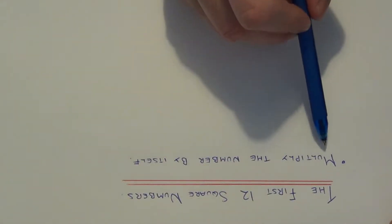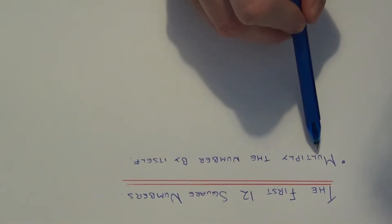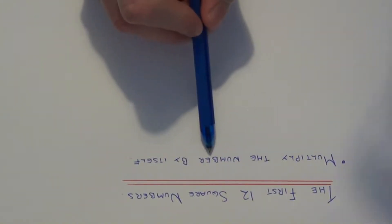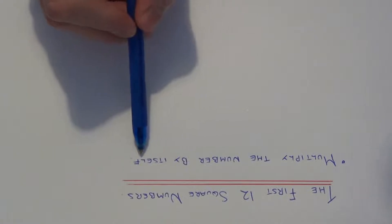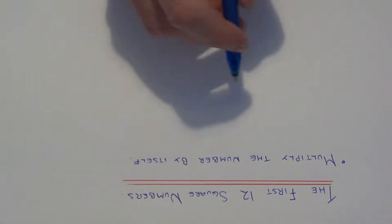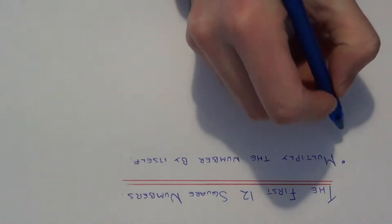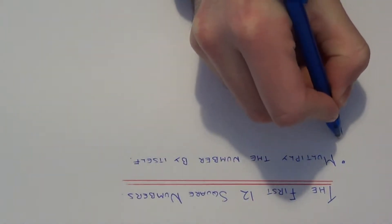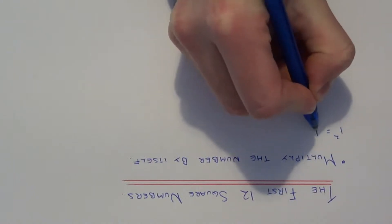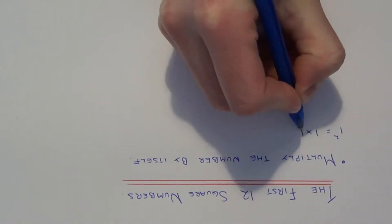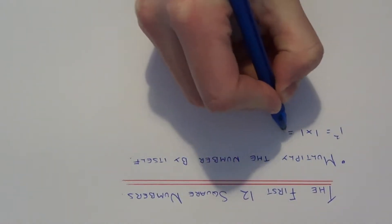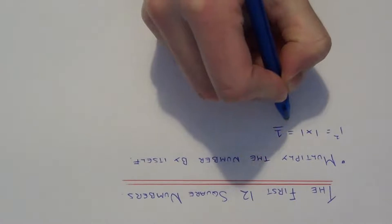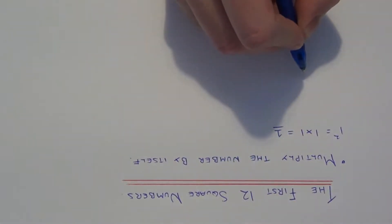To get a square number, all you need to do is multiply the number that you're squaring by itself. So the first square number will be 1 squared, which is 1 times 1, which gives us 1. So 1 is your first square number.